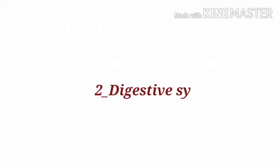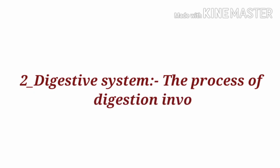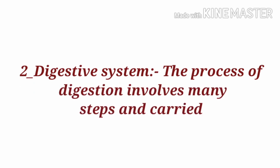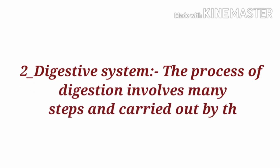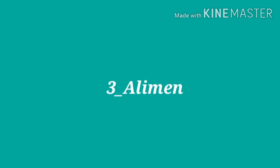Next, digestive system. The process of digestion involves many steps and is carried out by the digestive system. Digestive system कहते हैं पाचन तंत्र को. तो पाचन की प्रक्रिया में बहुत सारे steps, बहुत सारे चरण होते हैं, जो कि सिर्फ digestive system यानि पाचन तंत्र की प्रक्रिया के द्वारा ही किये जाते हैं.